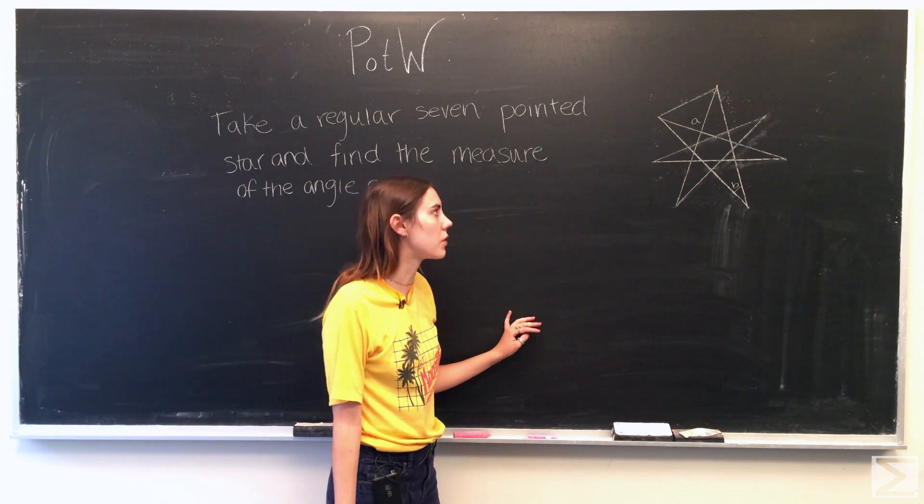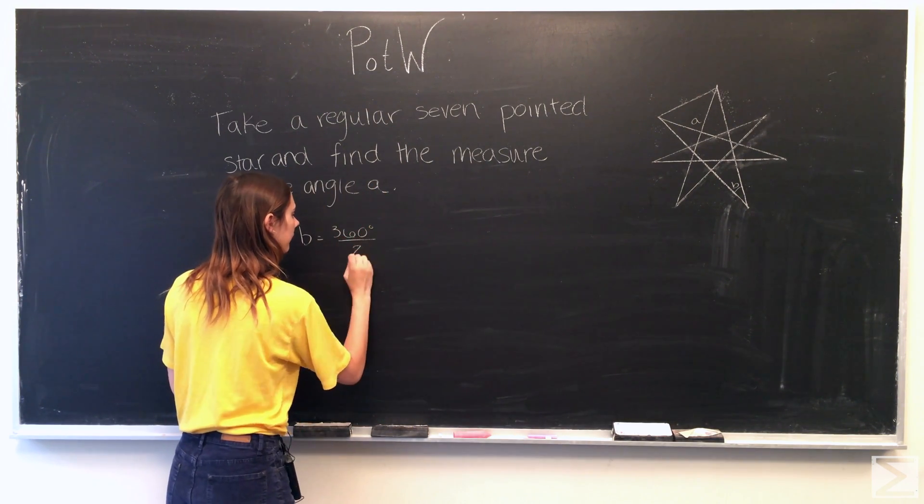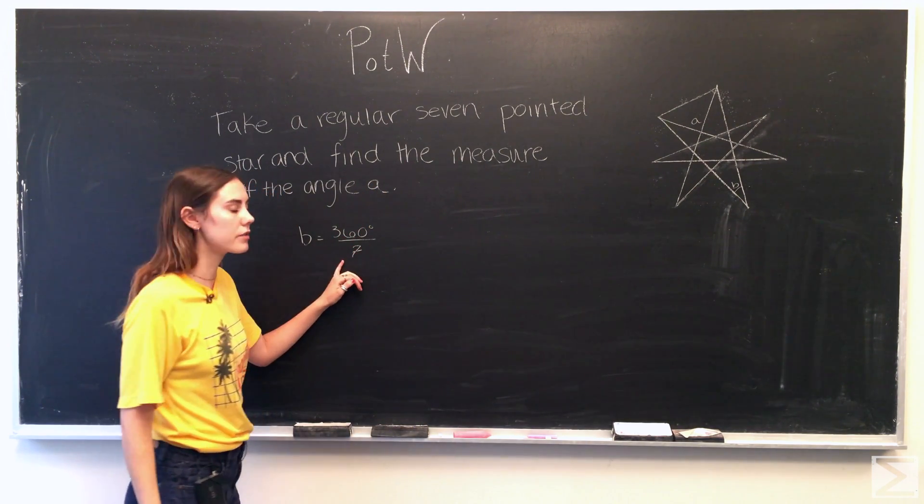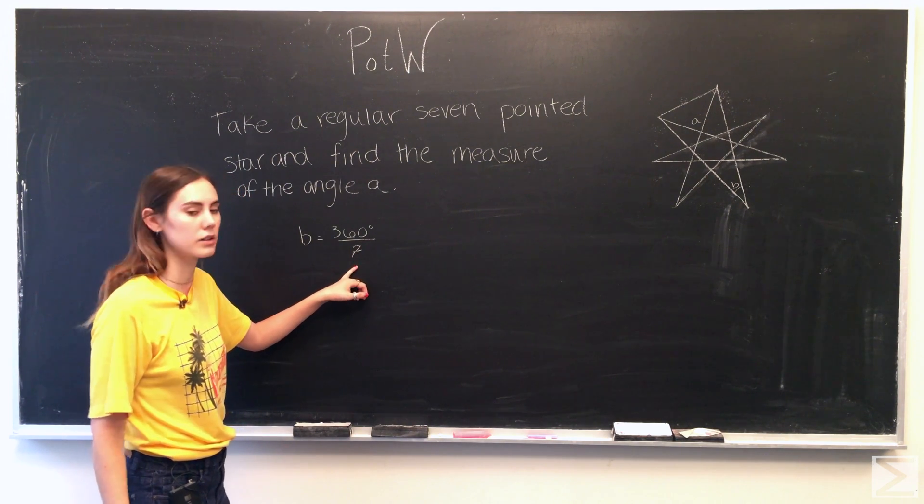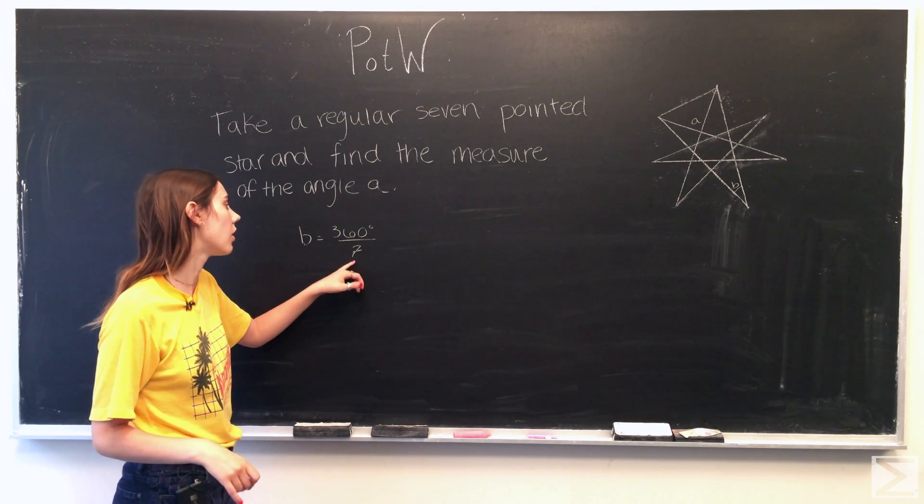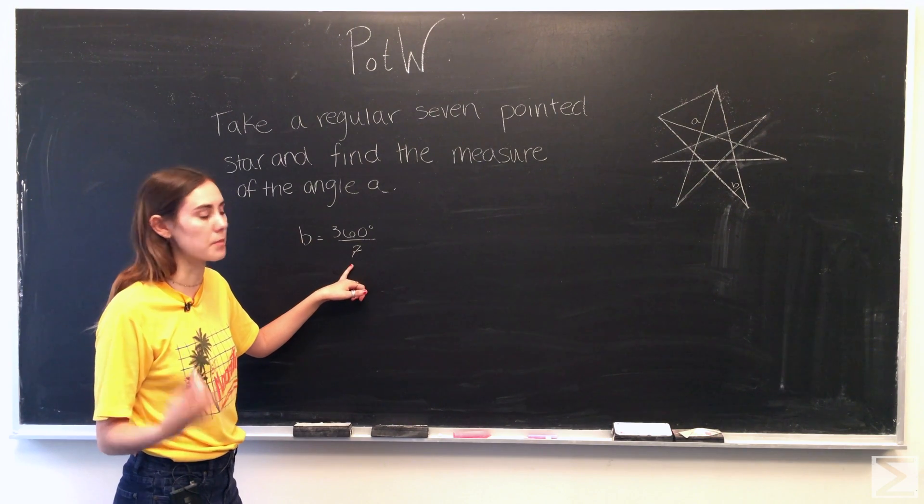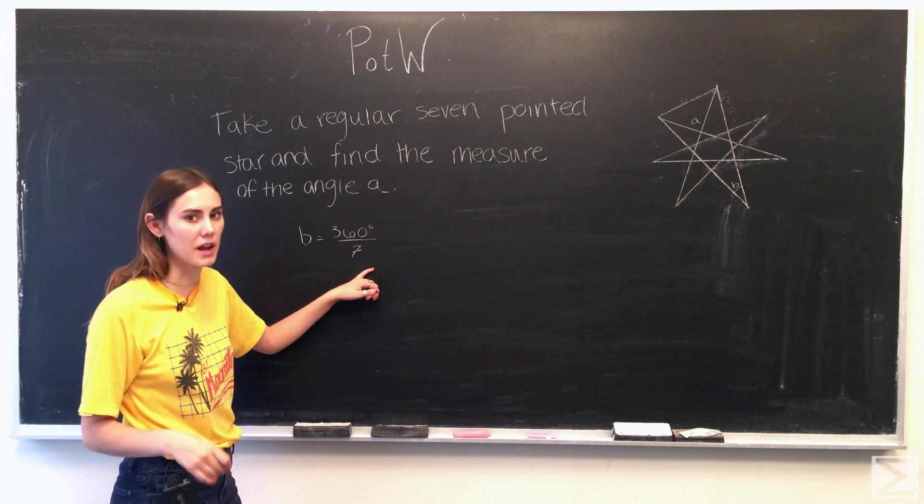So we can write a little equation for that. So the arc of the circle is 360, the entire circumference of the circle, over seven. But since it extends from edge to edge, it's actually divided by two.